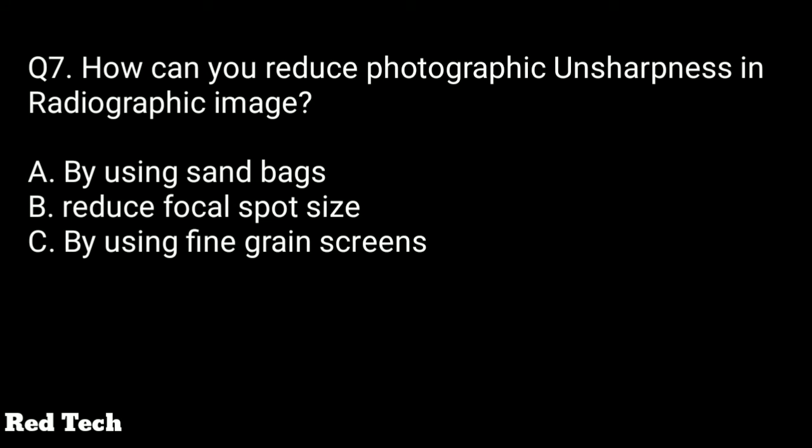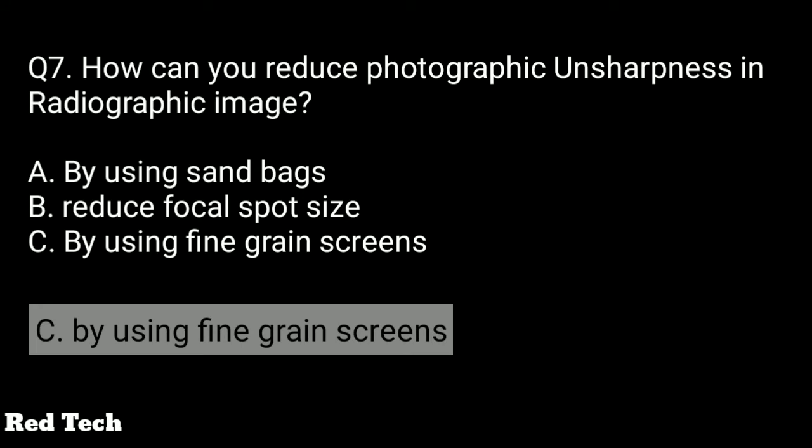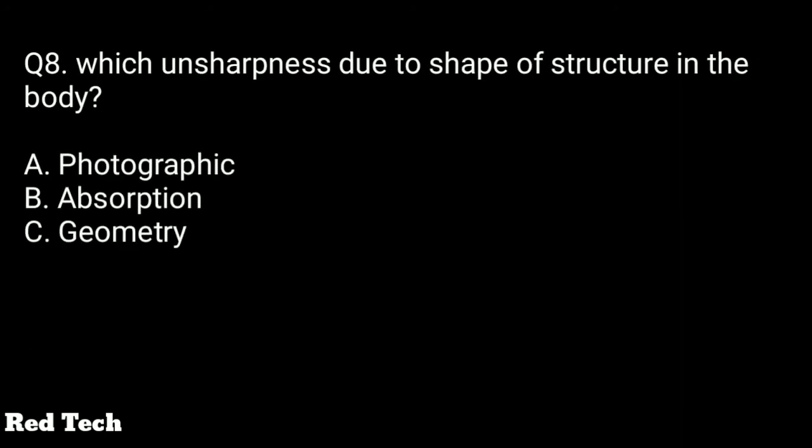Question number seven: how can you reduce photographic unsharpness in a radiographic image? Options are by using sandbags, reduce focal spot size, or by using fine grain screens. The right answer is by using fine grain screens. Also, maintaining good film-screen contact reduces photographic unsharpness.